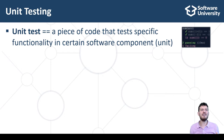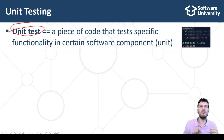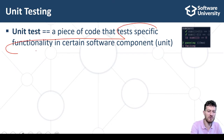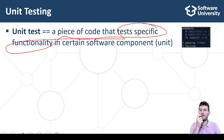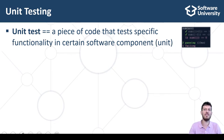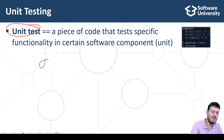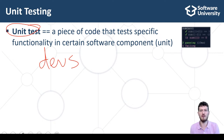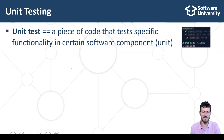Unit testing is an important concept and practice in software development. Unit tests are pieces of code that test specific functionality in a certain software component called a unit. Unit tests are written by developers, not by QA engineers. Unit tests are part of the production source code and they aim to improve code quality, reliability, and maintainability.